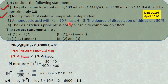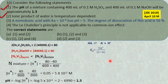For statement 3: monobasic weak acid HA dissociates to give A⁻ and H⁺. Ka = Cα²/(1−α). Here Ka = 10⁻⁵ and pH = 5 means H⁺ = 10⁻⁵ = Cα. Substituting: 10⁻⁵ = 10⁻⁵ × α/(1−α), so 1 = α/(1−α), giving α = 0.5 = 50%. Degree of dissociation is 50%—statement 3 is correct.